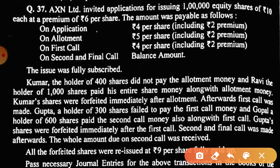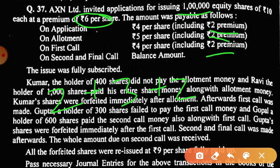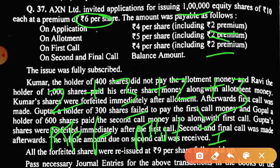So we will start reading that question. AXN Limited invited applications for issuing one lakh shares of rupees 10 each and six rupees premium. This six rupees premium is called as: 2 on application, 2 on allotment, and 2 on first call. The face value of the share is 10 rupees, called as: 2 on application, 3 on allotment, 2 on first call, and 3 on second and final call.